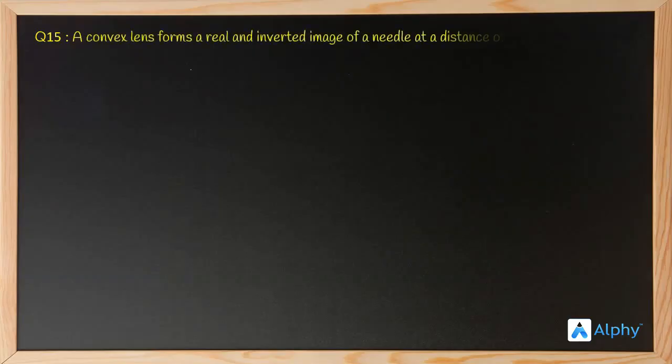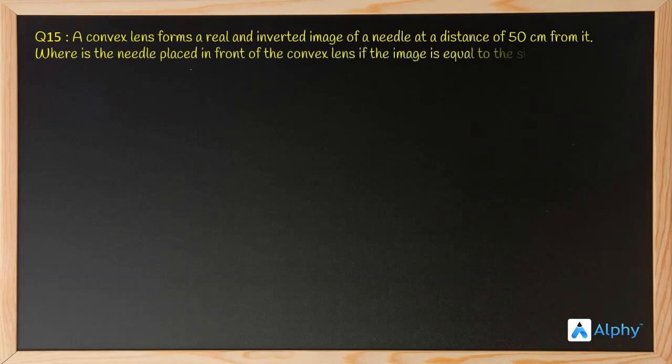A convex lens forms a real and inverted image of a needle at a distance of 50 centimeters from it. Where is the needle placed in front of the convex lens if the image is equal to the size of the object? Also, find the power of the lens. So here, as usual, let's list down the things given.